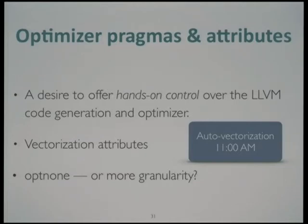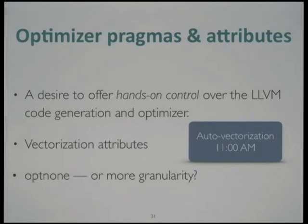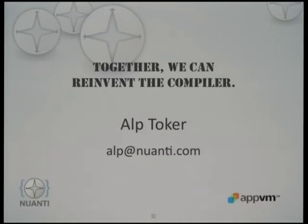There's been a lot of interest in providing attributes and pragmas to communicate data to the backend. This is something that's been requested for a while and we haven't been able to really settle on the mailing list — it always gets delayed. That's something I'm going to bring up with Renato and we're going to have a look at options. We're just going to pop that in for the few minutes we have. Thank you.